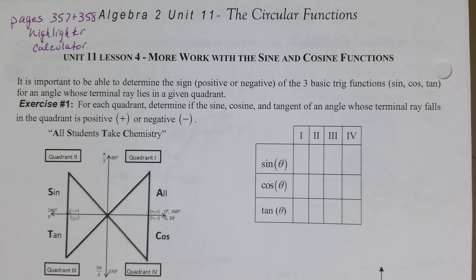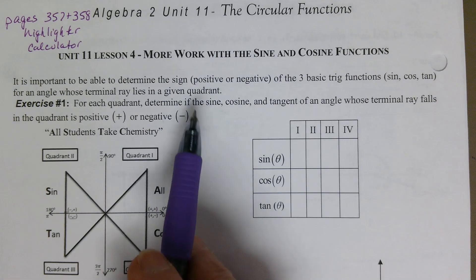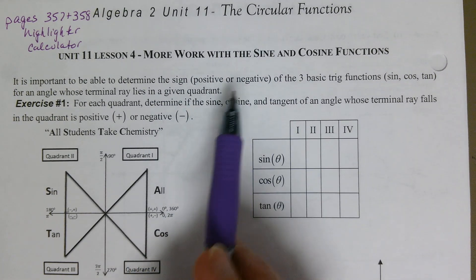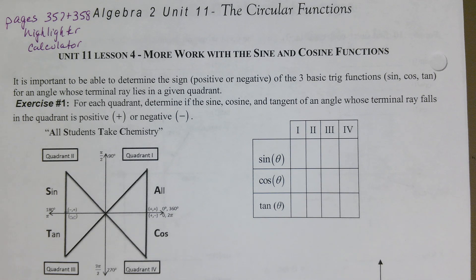It's important to be able to determine the sign — positive or negative — of the three basic trig functions: sine, cosine, and tangent, for an angle whose terminal ray lies in a given quadrant.